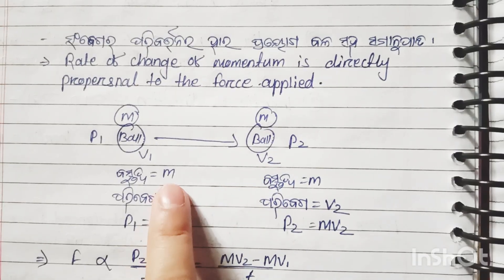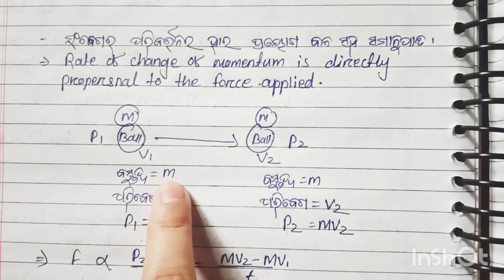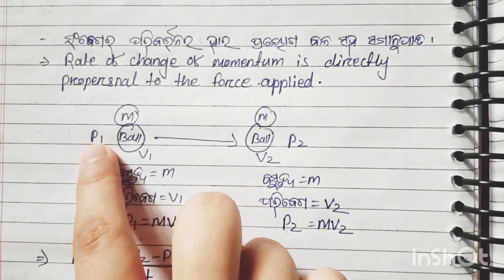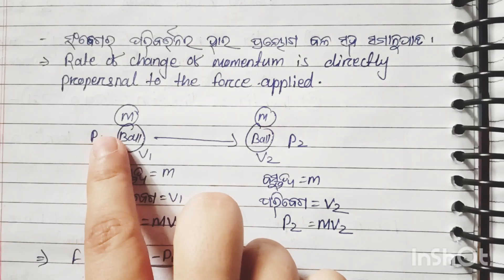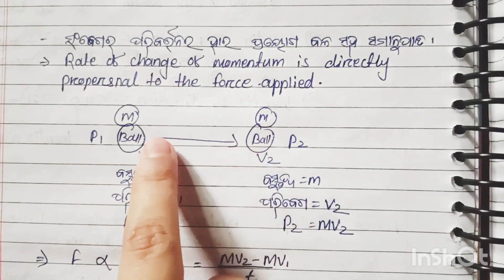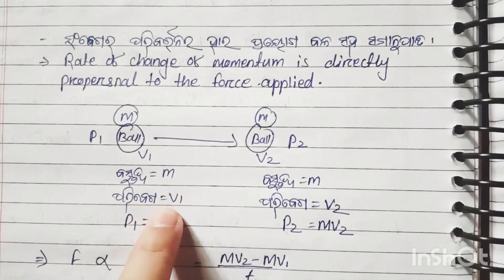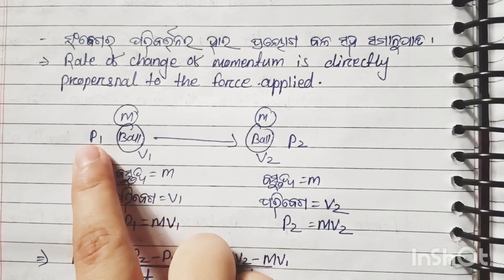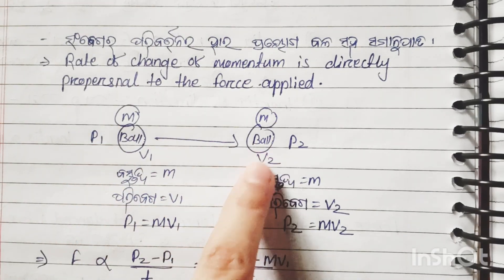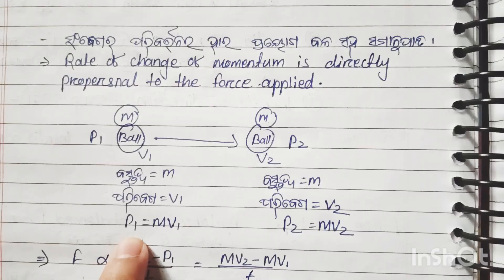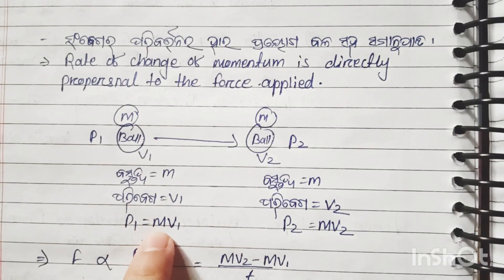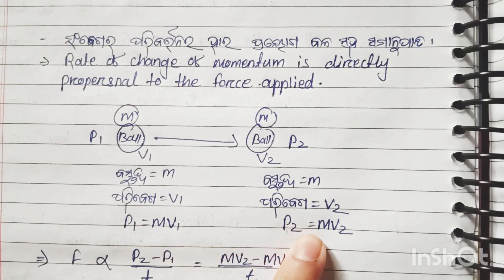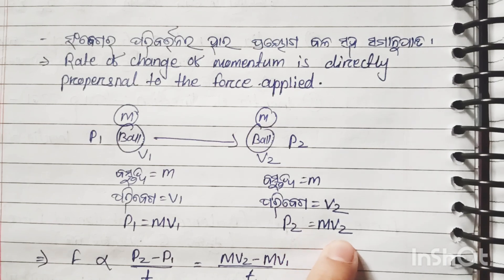The momentum will change. Momentum p equals m into v. So p1 is the initial momentum and p2 is the final momentum. p1 equals m into v1, and p2 equals m into v2.